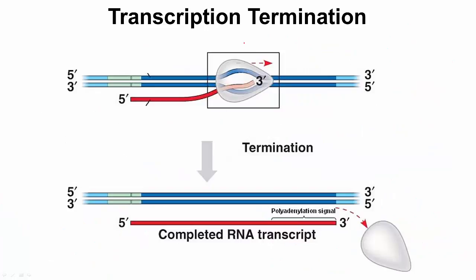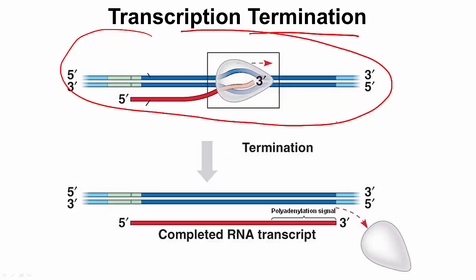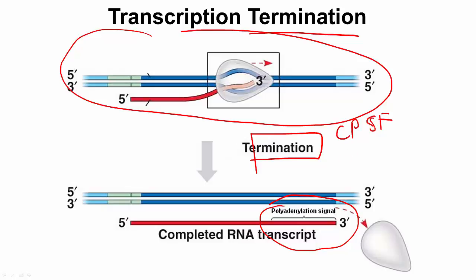The last step of transcription is called termination. Eventually the process will transition from elongation to termination. Termination occurs once the RNA polymerase reaches the end of a gene. At the three-prime end of the RNA transcript, there is a specific sequence called the polyadenylation signal. Two protein complexes — one called CPSF, which stands for cleavage and polyadenylation specificity factor...